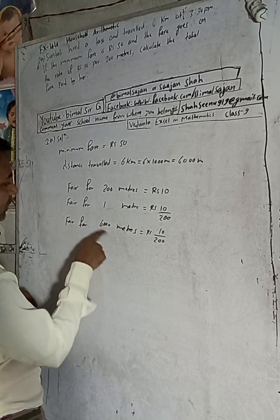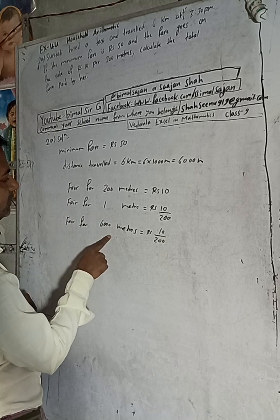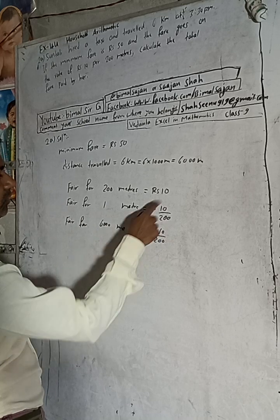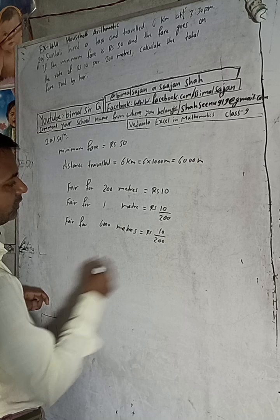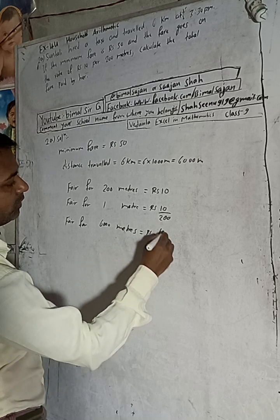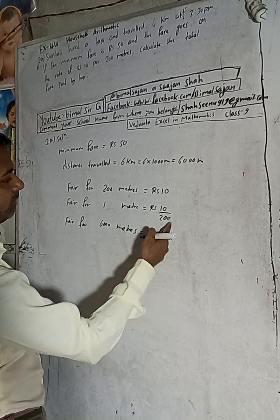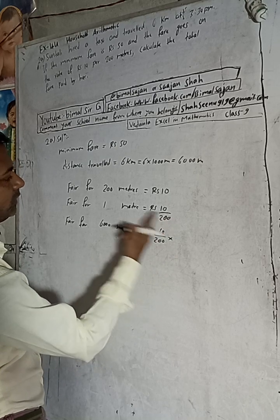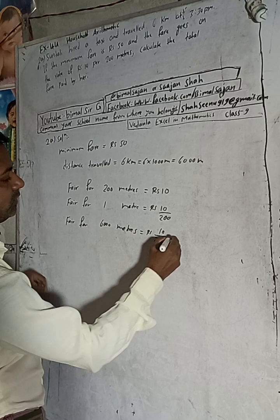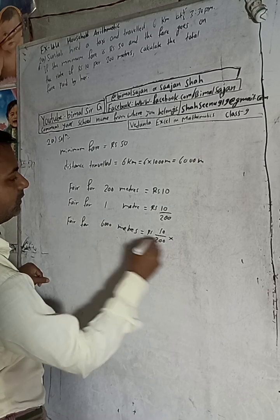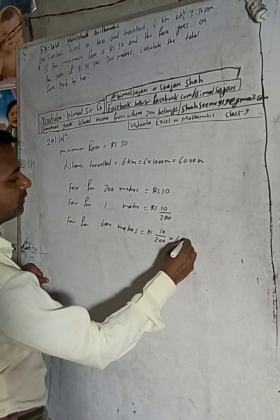Now, after 1 meter the distance increases to 6,000 meters. Since the distance increases, the amount must also increase. Increase means we multiply. So we multiply Rs 10 divided by 200, then multiply by 6,000. That gives us the fare for 6,000 meters.